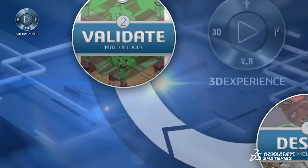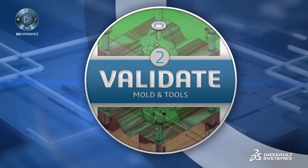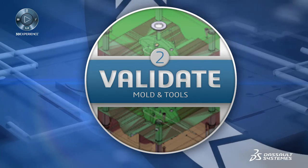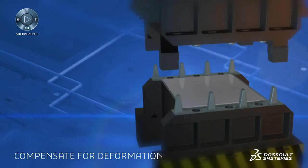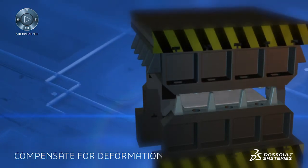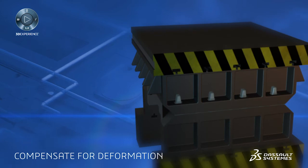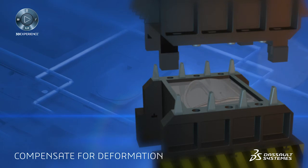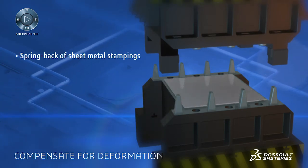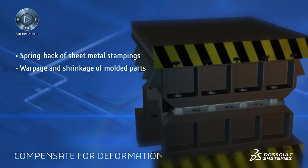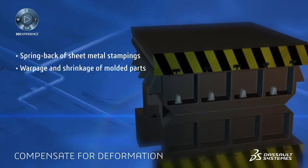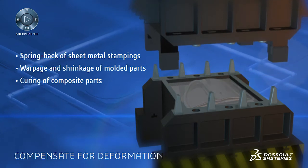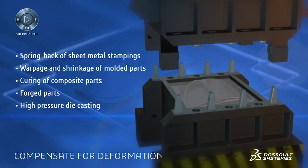Next, let's look at how CATIA can accelerate the validation of how a mold or tool will behave in production. As mold and tooling designers, we need to be able to quickly optimize tooling designs to compensate for the actual material deformation that will occur during the physical forming operation — for example, the spring back that happens after sheet metal stamping, the warpage and shrinkage effect of plastic molded parts, the deformation caused by the curing of composite parts, as well as the effects of forging or high-pressure die casting.